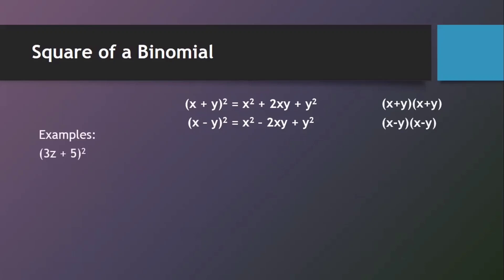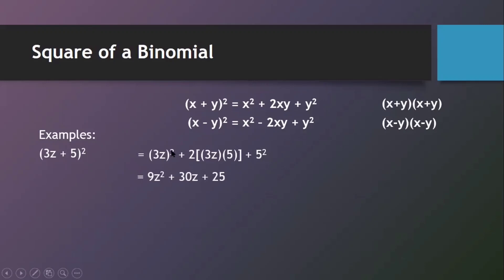Example: (3Z plus 5) squared. We square the first term to get 3Z squared, then add twice the product of the first and second terms: 2 times 3Z times 5, then add the square of the last term: 5 squared. Simplifying: 3Z squared gives 9Z squared, 2 times 3Z times 5 gives 30Z, and 5 squared gives 25. So the final answer is 9Z squared plus 30Z plus 25.